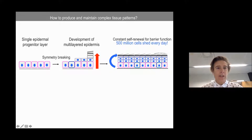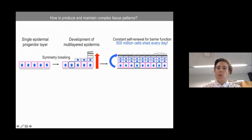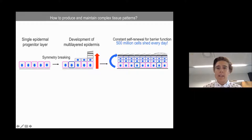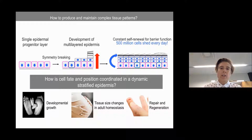The epidermis develops from a single layer of progenitors, and then asymmetric fating happens where a subset of stem cells decides to differentiate. At the same time they move upwards through the layers to form differentiated layers, where every single layer represents a further differentiated state. In the end these cells die and slough off. During development, but also constantly during adulthood, the epidermis is self-renewed — we slough off 500 million cells every day.